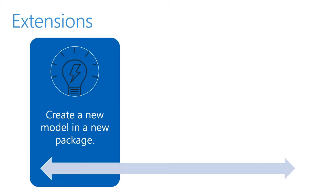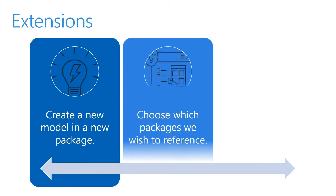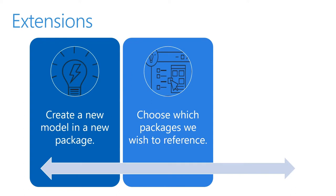We can only change that specific element or XML file if we are overlaying in the application suite model. So if we choose to customize an element in a different model, we have to create an extension of that element. In order to be able to create an extension of an element from another model, we must ensure the model is being referenced in our new model.